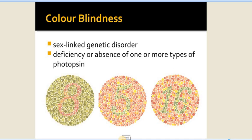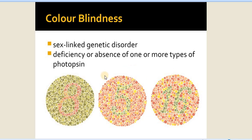Color blindness occurs due to the absence of either the blue-sensitive, green-sensitive, or red-sensitive cone. It is a sex-linked genetic disorder involving deficiency or absence of one or more types of cones.